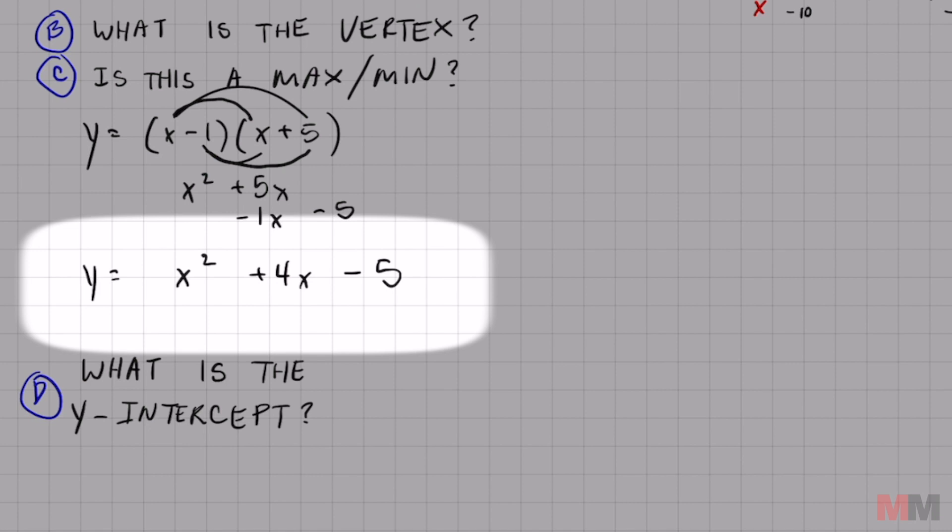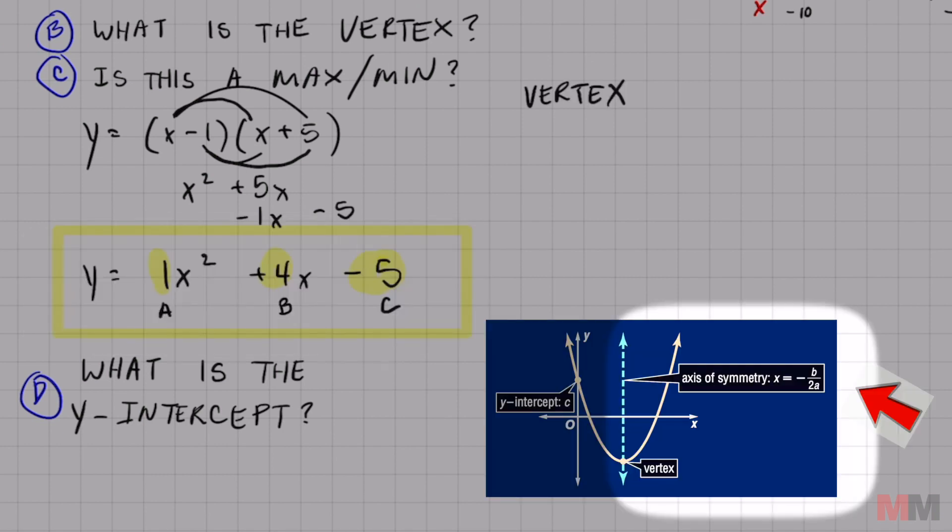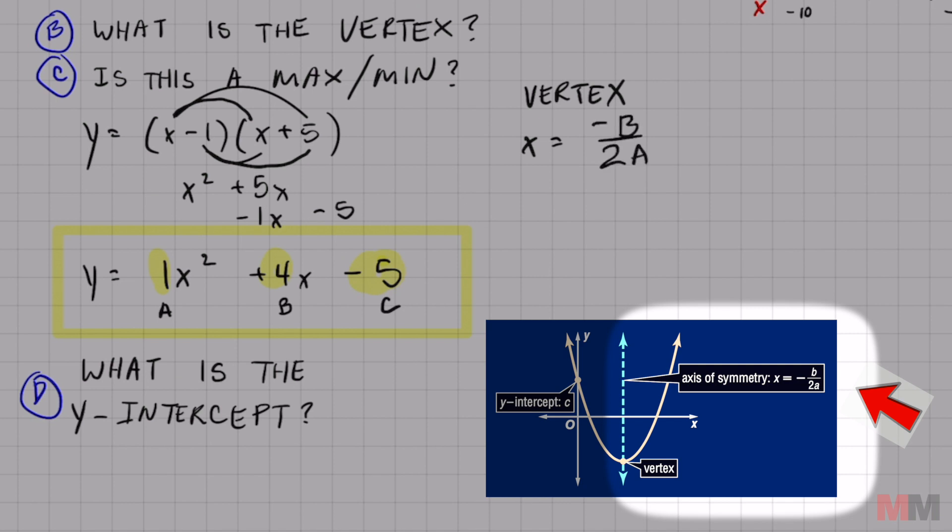And once you have it like that, that quadratic equation, they'll usually label the coefficients and the constants with these letters. They'll call this one a, the one next to x squared. They'll call this one b, the one next to x. And the constant c, the number without a variable. And we're gonna use those numbers into a vertex formula. The vertex formula is x equals negative b over 2a. That's why we labeled it a, b, and c.